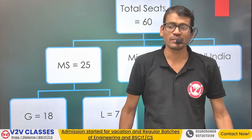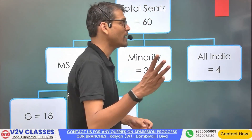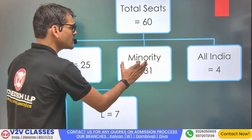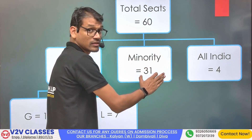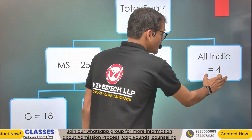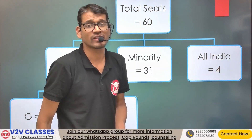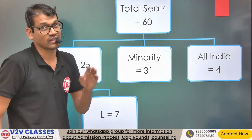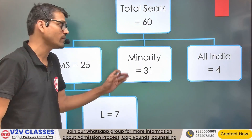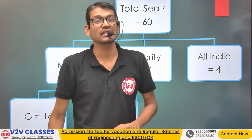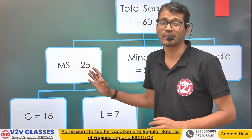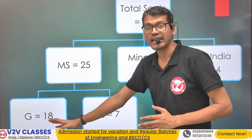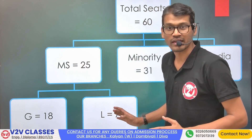If I talk about 60 seats, then 60 seats are divided into three parts: first, the State level; then, Minority level; then, All Over India. For All India, people who qualify through JEE will have 4 seats. The people who are Minority will have 31 seats. The people who are Gujarati Minority will have 31 seats. And for the state-level seats, 25 seats are available — of which general category has 18, and ladies have 7.